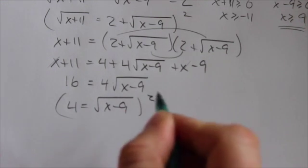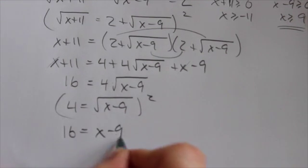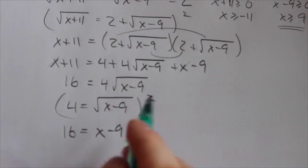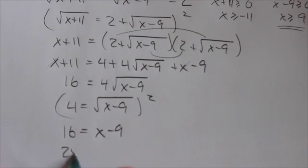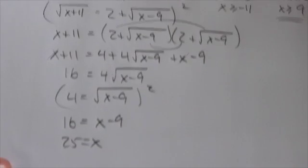But that one divided out so I can square here. This is going to get 16 is equal to x minus 9. Square both sides, get through the square root. Add the 9 over and I get 25 is equal to x.